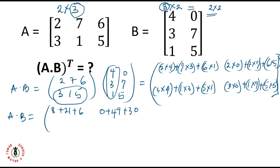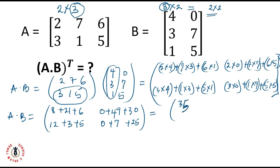For the second row, I have 3 times 4 for the first element of the second row. Computing: 8 plus 21 plus 6 equals 35, and 0 plus 49 plus 30 equals 79. For the second row: 3 times 4 is 12, plus 1 times 3 is 3, that's 15, plus 5 times 1 gives 20. And 3 times 0 is 0, plus 1 times 7 is 7, plus 5 times 5 is 25, that's 32. So AB equals the matrix with values 35, 79, 20, and 32.